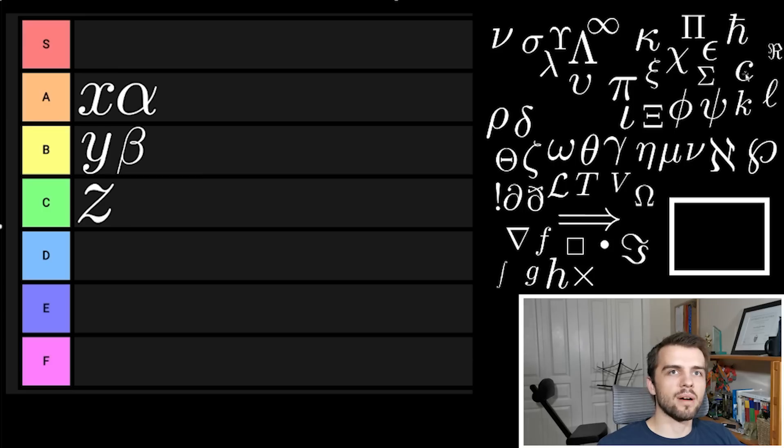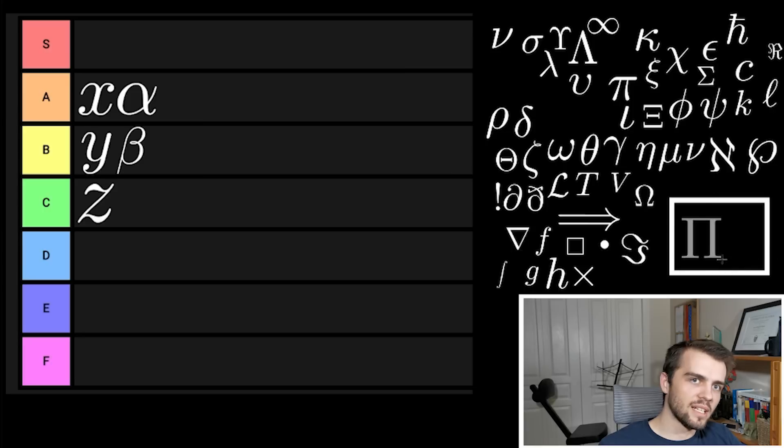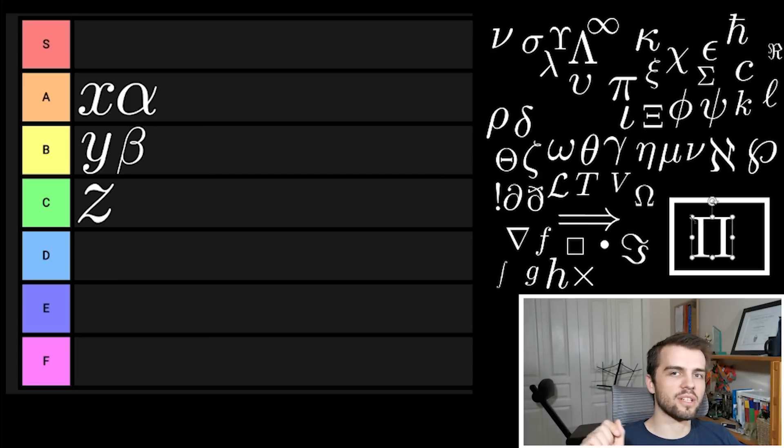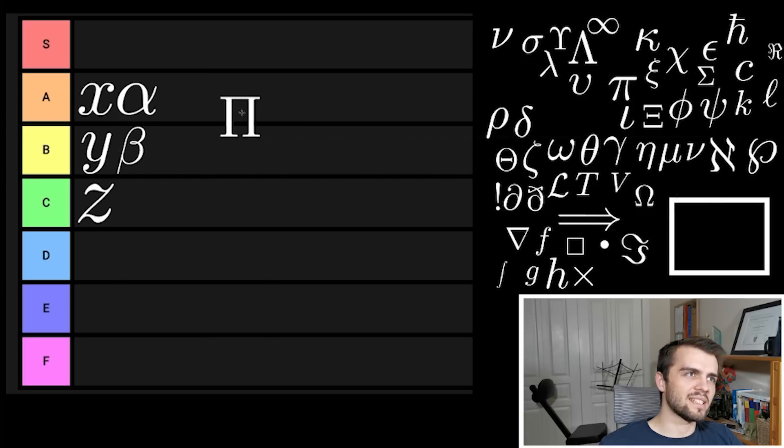Here we got capital Pi. Capital Pi is pretty cool. I didn't even know it existed for a long time. It's the product of a bunch of things. If you have a bunch of variables, you take capital Pi, take the product of them. Pretty cool stuff. I'm going to put Pi as A tier because of its computational functionality.